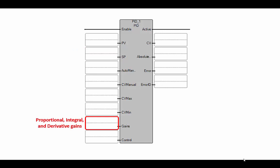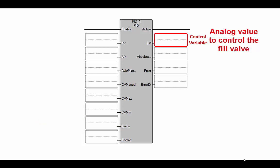My proportional, integral, and derivative gains will be specified here in this variable, and they will be used to determine this control variable, which will be sent out and open and close the fill valve.